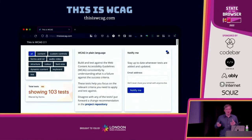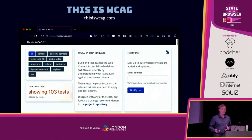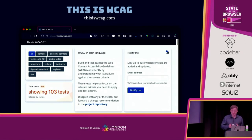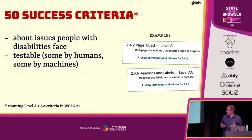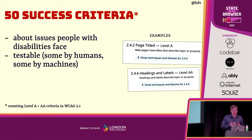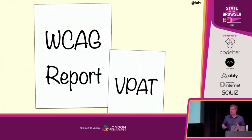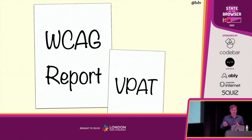There are also derivatives of WCAG — use them with caution because they're not the law, but they're extremely helpful because they put WCAG in plain language. Something I wish WCAG would do itself, but it's really hard to move that group of people to do that given everything else they're working on. The 50 success criteria are all about issues that people with disabilities face, they're all testable by humans or machines, and when testing has happened, reports come out — usually a WCAG report and sometimes a VPAT, which is common in the US and increasingly in Europe.